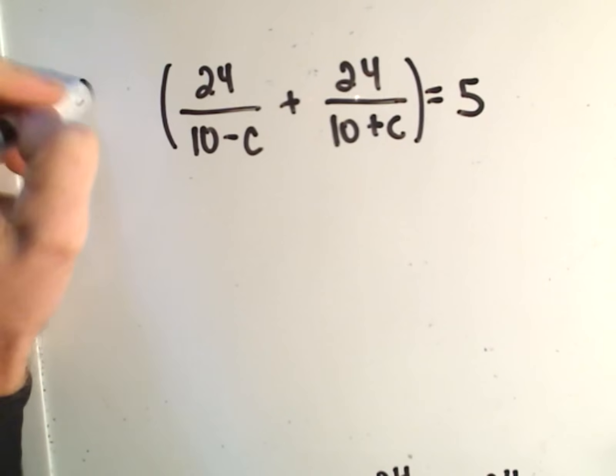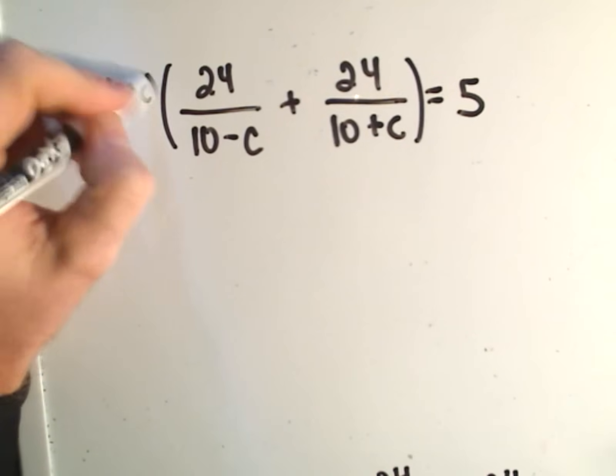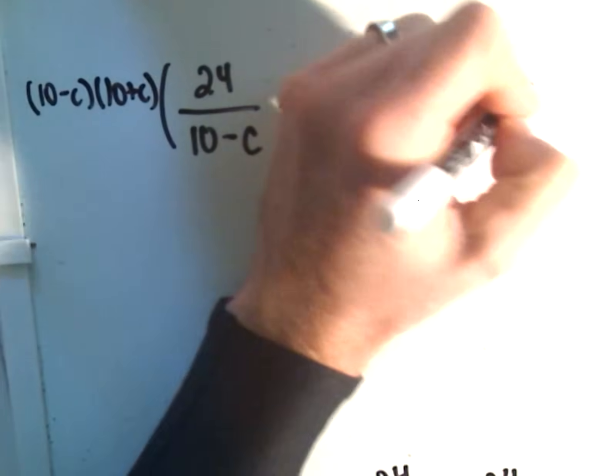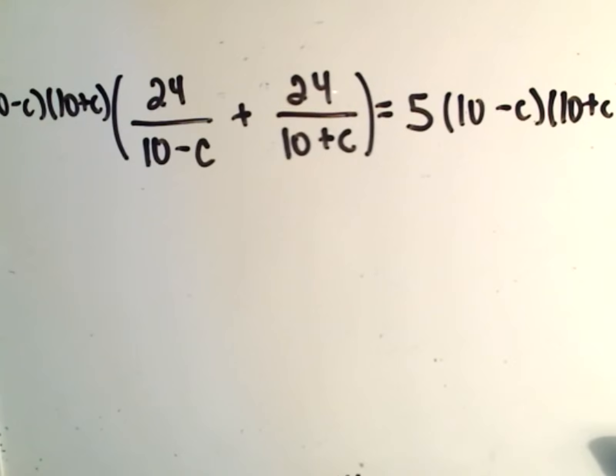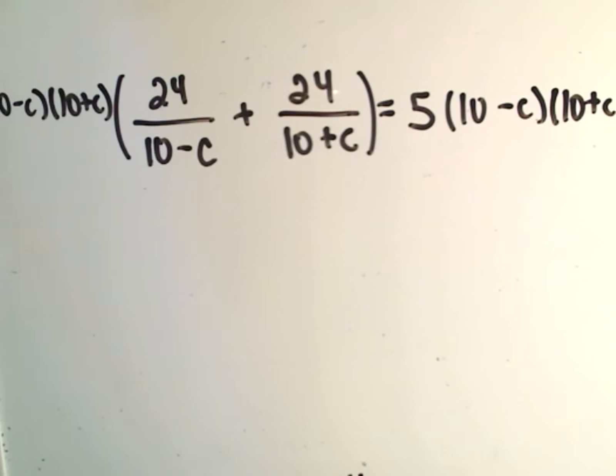if we multiply both sides by 10 minus C, so if I do it to the left, I've got to do it to the right. So, got it all squeezed in here a little bit. Let me zoom out here real quick.